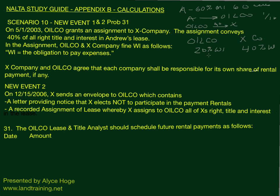Now the new event is that on December 15th, 2006, X sends a letter to Oilco saying they no longer want to be responsible for the payment of rentals. X sends an envelope to the oil company containing a letter providing notice that X elects not to participate in the payment of rentals, and also a recorded assignment of lease whereby X assigns to Oilco all of its right, title, and interest.